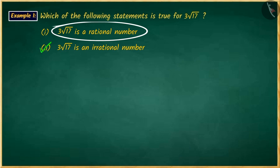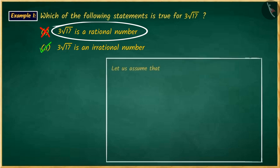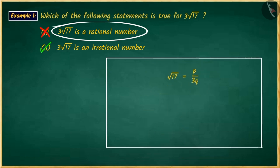If you have chosen the first option, it is a good try. But this answer is wrong. Because if you rearrange it, you will get square root of 17 equal to p upon 3q.